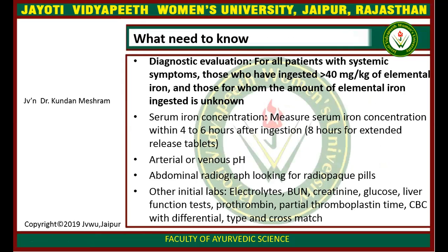From today's lecture, what we need to know regarding diagnostic evaluation of iron toxicity: for all patients with systemic symptoms, those who have ingested more than 40 mg per kg of elemental iron, and those for whom the amount ingested is unknown, serum iron concentration should be measured within 4 to 6 hours after ingestion, or 8 hours for extended-release tablets. Arterial and venous pH should be checked. Abdominal radiographs should look for radio-opaque pills. Other initial lab investigations include electrolytes, BUN, creatinine, glucose, liver function tests, prothrombin time, partial thromboplastin time, CBC with differential blood count, and type and cross-match.